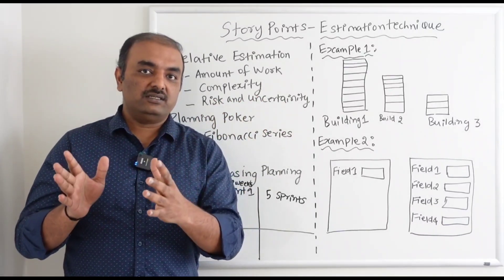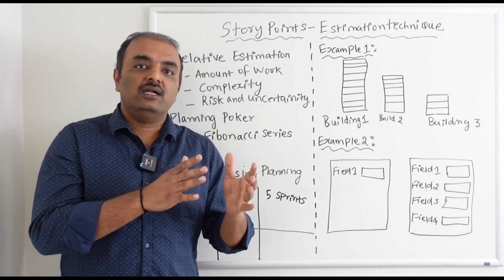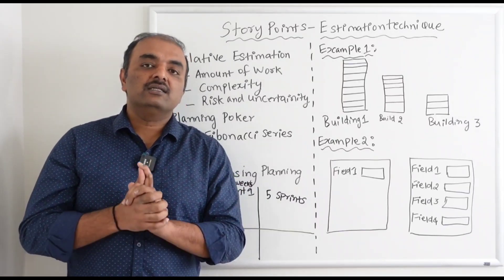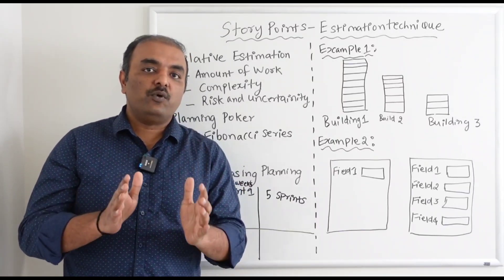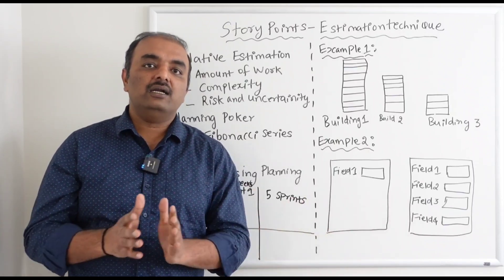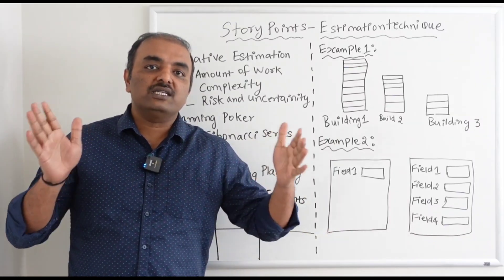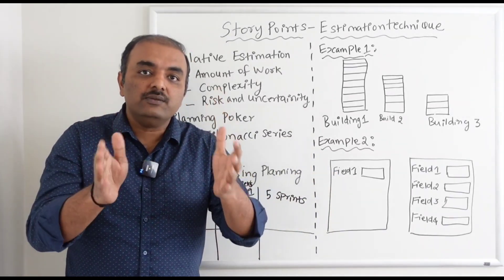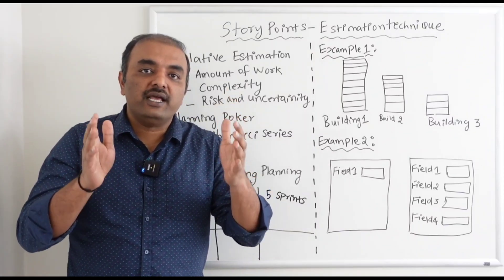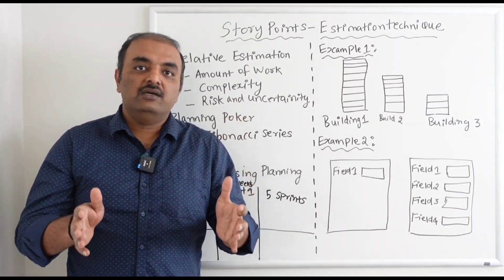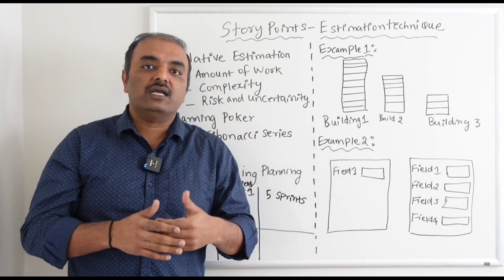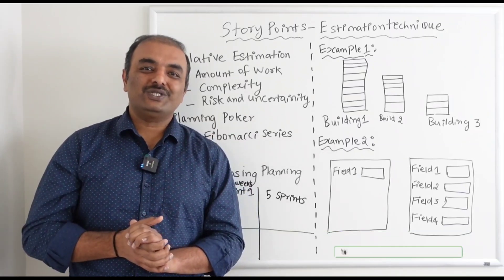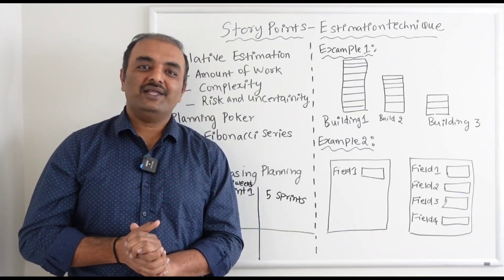To summarize: story points are a relative estimation where you compare stories and estimate based on complexity, amount of work, and risk. You use planning poker to do this exercise. You never equate story points to days or hours — that is the wrong practice. Instead, use velocity to calculate how many sprints it will take to complete all stories. I hope you like my training videos — please subscribe to my YouTube channel. Have a great day, bye bye.